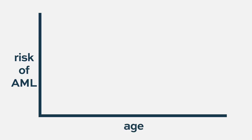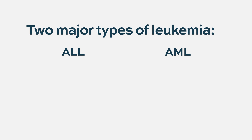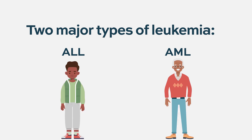Kids make up the vast minority of AML cases — it's primarily a disease of older adults. Through life, as you get older and older, the risk of AML increases over time. In leukemias, there are two major types: ALL and AML. ALL is far more common in children, but AML does exist in children too, and the risk is higher for teenagers than for young children.